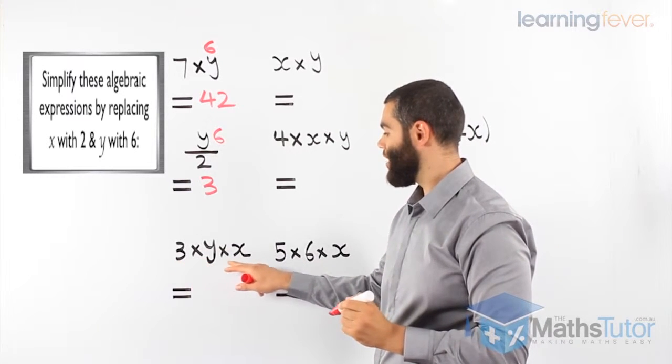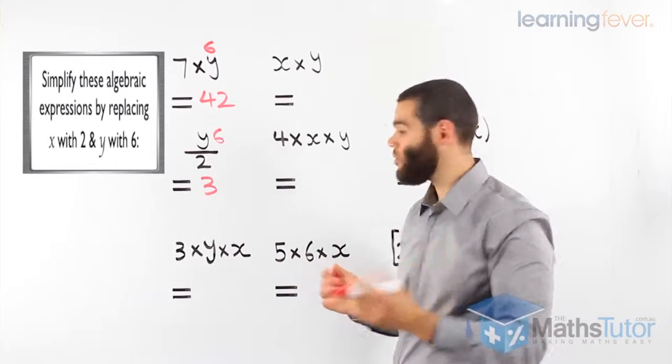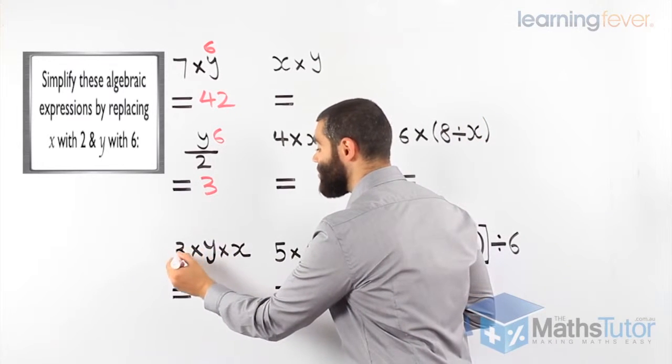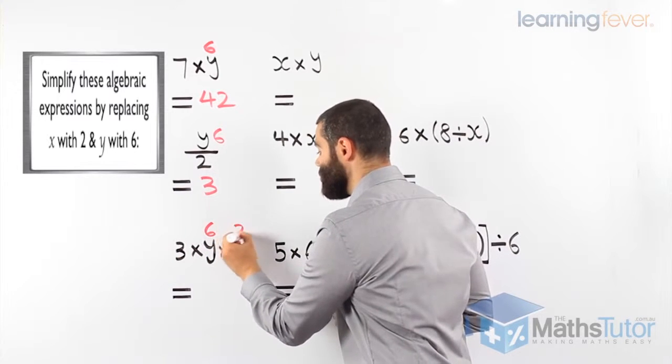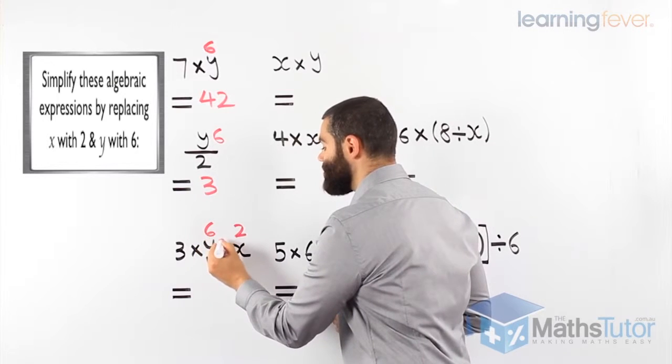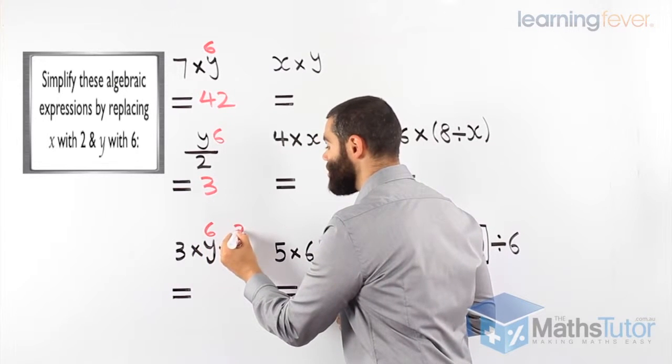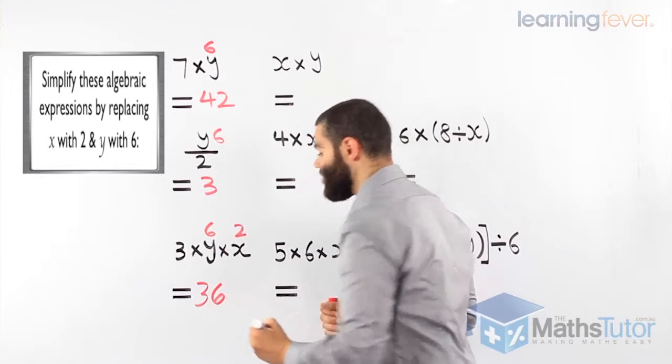3 times y times x. Y is 6 and x is 2. 3 times 6 times 2. And our answer? 36.